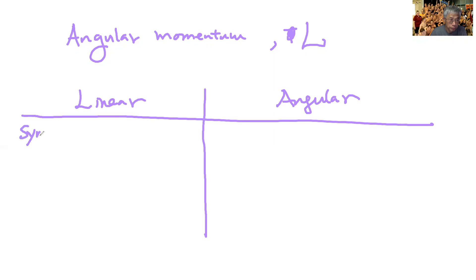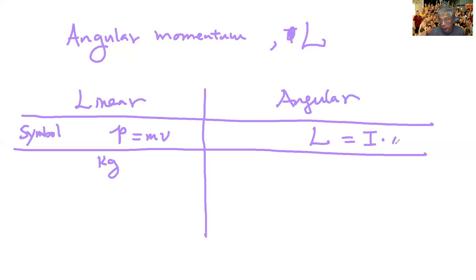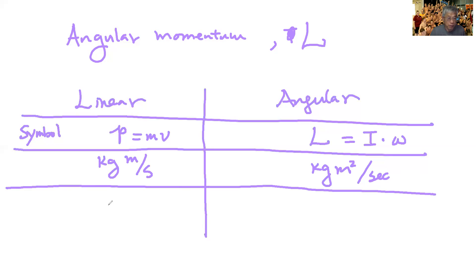So for the symbol, linear momentum is small p and angular momentum is capital L. The unit of linear momentum is kg·m/s, since it's p = mv. Angular momentum L = Iω, where I is moment of inertia and ω is angular velocity, has units of kg·m²/s. The radian is implied but you don't need to write it. Both of these quantities are vectors.